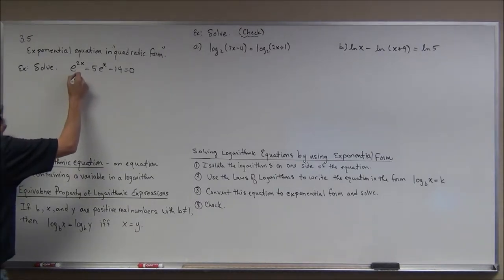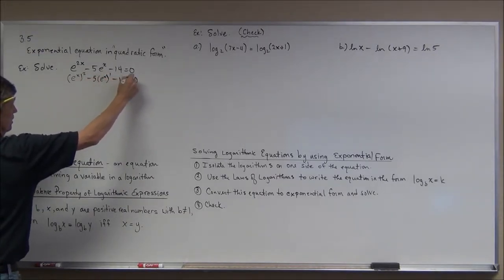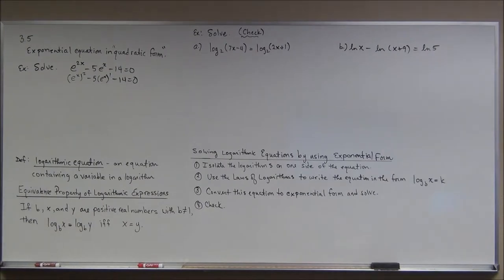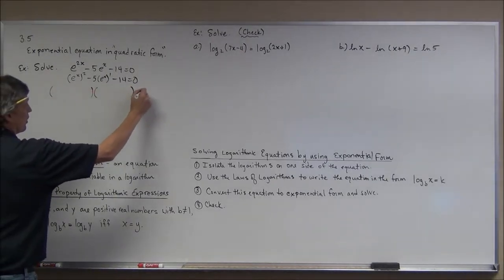See, e to the 2x is e to the x squared minus 5 times e to the x to the first minus 4 equals 0. So I'm going to see if I can solve this like a quadratic, at least start off by solving it like a quadratic, to see if it factors. So what I'm going to do here is I'm going to see if this will factor into a couple of binomials.